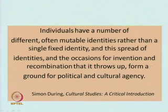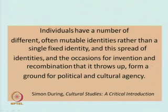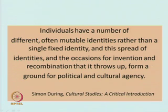I will quickly quote from Simon During, from his book Cultural Studies: A Critical Introduction. During has this to say: individuals have a number of different, often mutable identities rather than a single fixed identity. This spread of identities and the occasions for invention and recombination that it throws up form a ground for political and cultural agency.